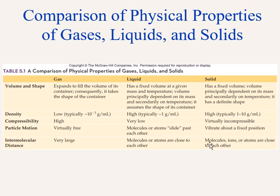Solids, on the other hand, have their particles fixed in a location, only vibrating in place. So a solid will not take the shape of a container. For example, you cannot get a car inside your home through a small door, because the solid metal or fiberglass of the car is not going to bend and reshape itself to fit through.